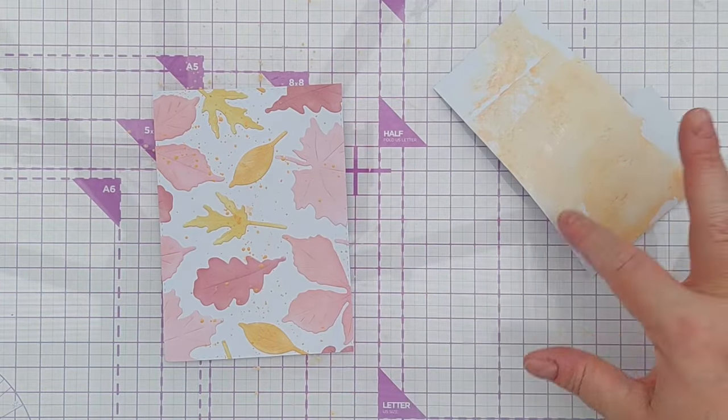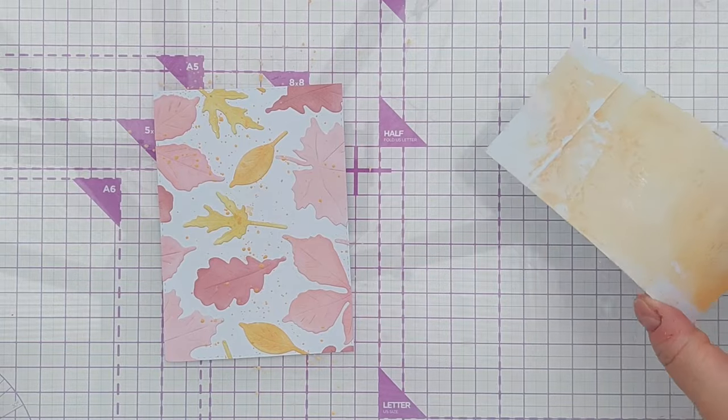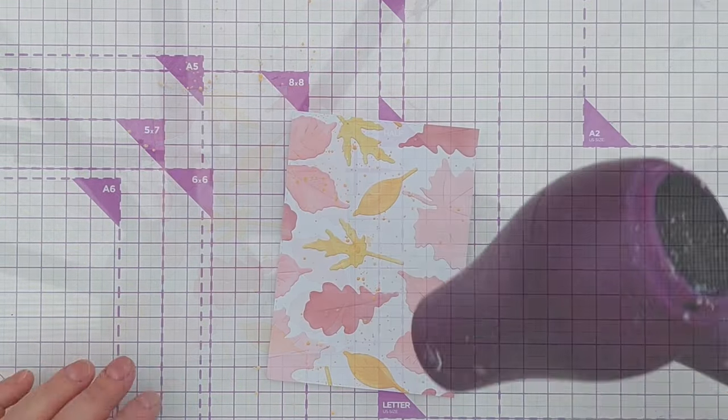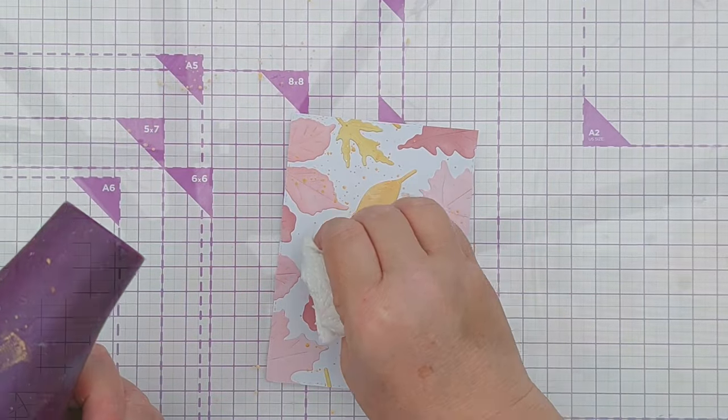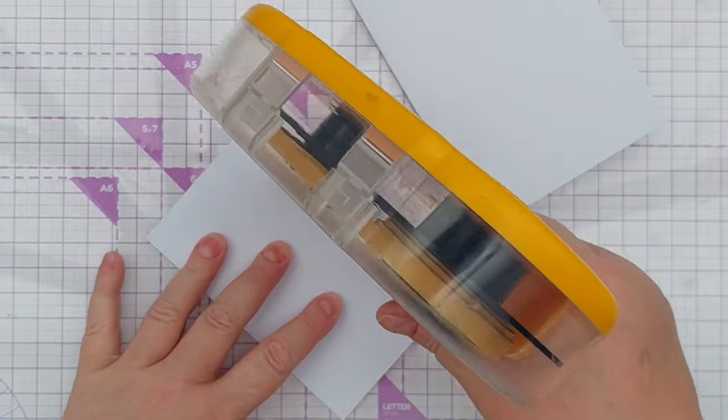I didn't want to waste that lovely shimmery paint so I've mopped it up with a bit of scrap white card, and I'm going to give this a little blast in my hair dryer to get things dry. Now I'm going to stick this on my card blank.